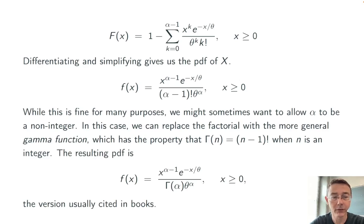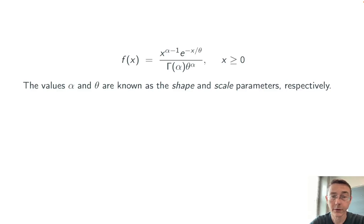And this is the version of the PDF of the gamma distribution that you'll usually see cited in books. There are common names for these parameters. Alpha is known as the shape parameter and theta is known as the scale parameter.